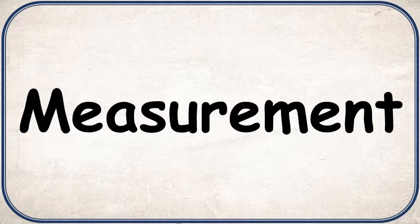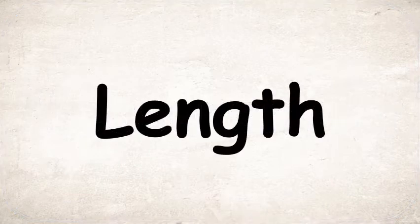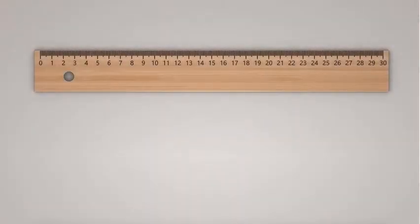These are used for measuring three of our main physical quantities: length, time, and mass. First we have length or distance, and there are many different types of equipment that we can use to measure length. Probably the most common is the ruler.